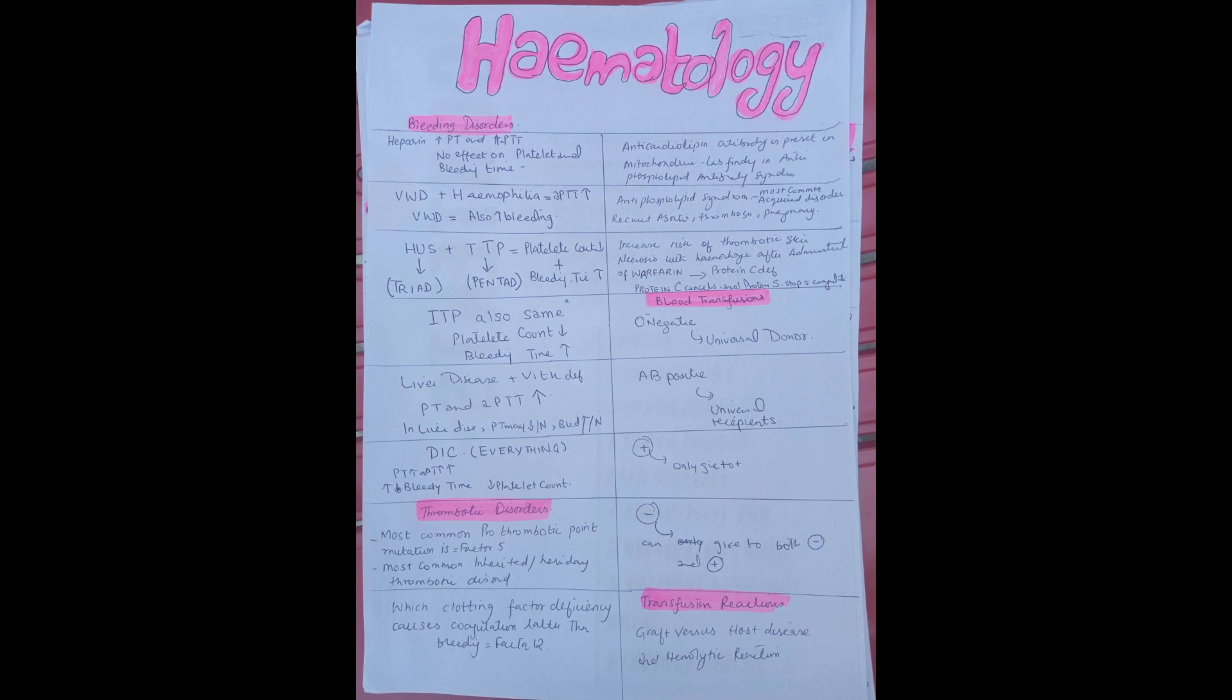The other two bleeding disorders are HUS and TTP. HUS causes the triad whereas TTP causes pentad. Both cause decrease in platelet count and increase in bleeding time.